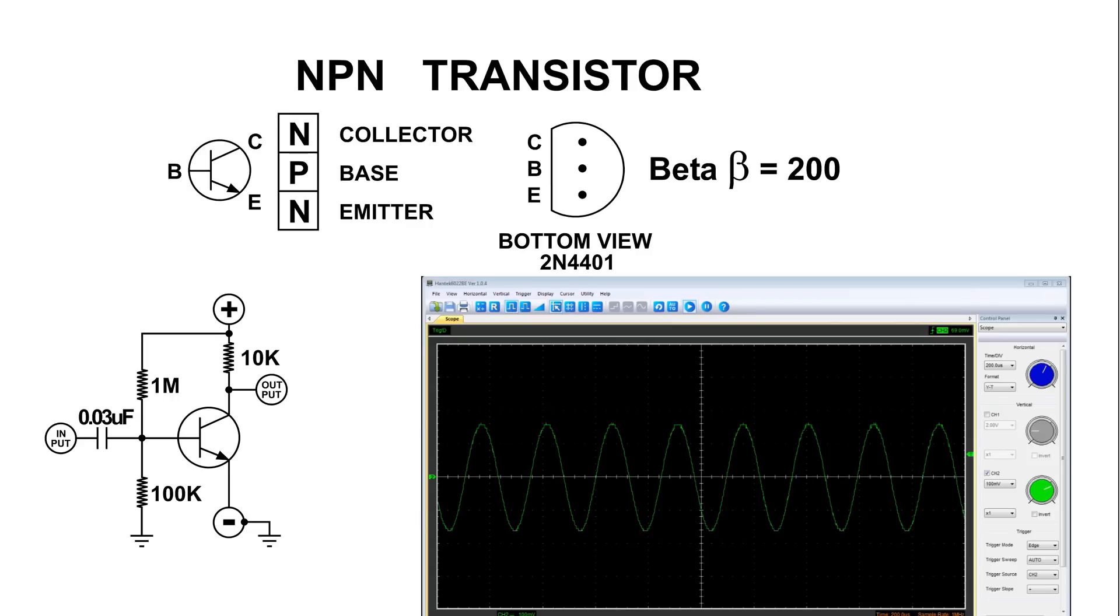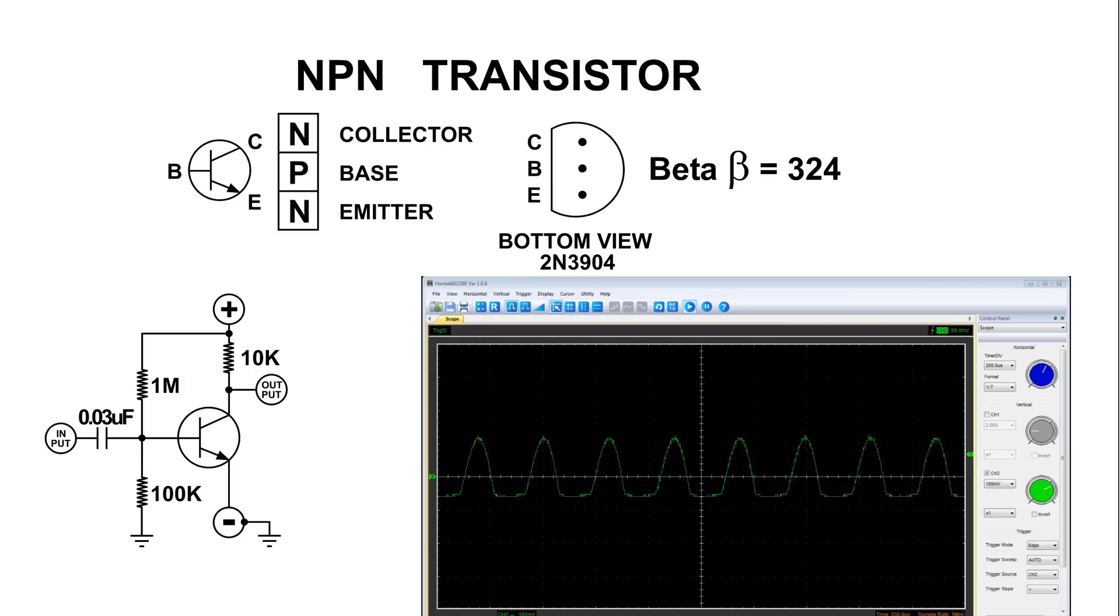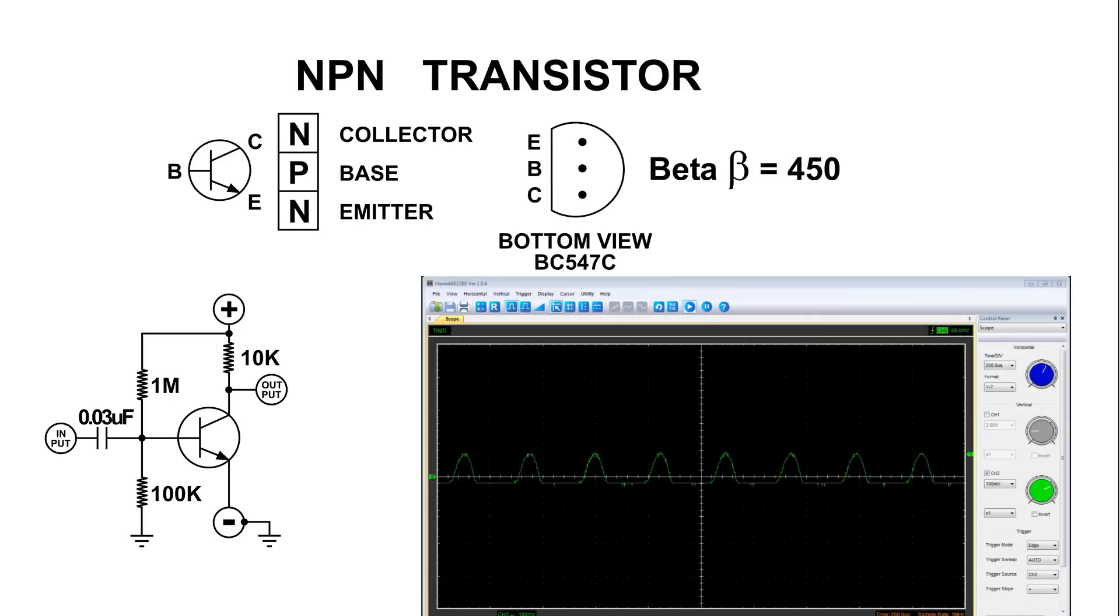As we saw in the video, with the 2N4401 and a beta of 200, we have a very nice sine wave. And of course, that's the way I designed it. But when I swapped out the 2N4401 for the 2N3904, a beta of 324, we now have a distorted signal, a flat bottom. And it got even worse when I switched out the transistor to a BC547C with a beta of 450.